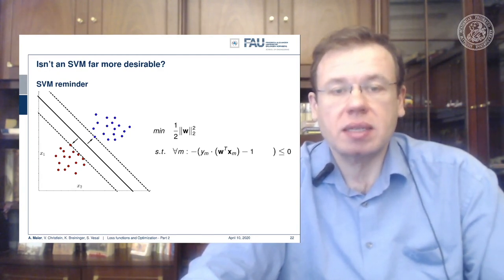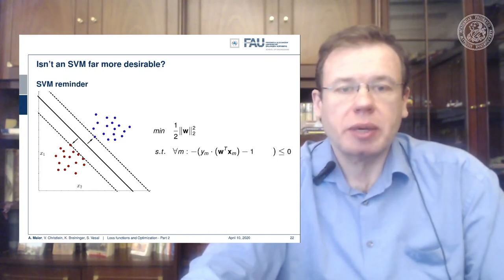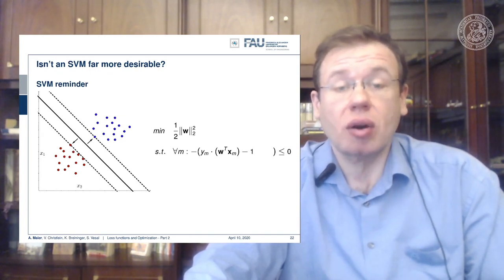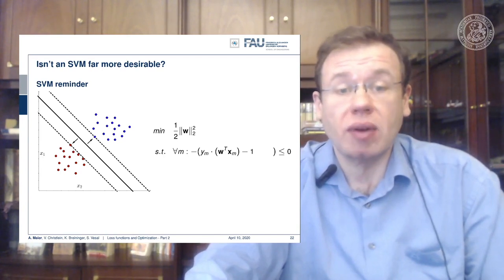What is done typically is that you find this minimization problem where w is the normal vector of our hyperplane and we minimize the magnitude of the normal vector. Note that this normal vector is not scaled, which means that if you increase the magnitude of w, your normal vector goes larger, and now if you want to compute signed distances from that, you typically divide by the magnitude of the normal vector.